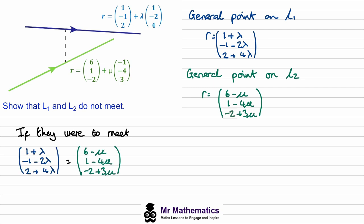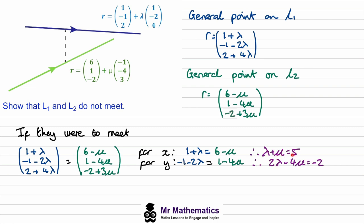We set up two simultaneous equations using x and y: for x, 1+λ = 6−μ giving λ+μ = 5; for y, −1−2λ = 1−4μ giving λ−4μ = −2. Solving these gives λ = 3 and μ = 2. Substituting into the z-coordinates, L1 gives 2 + 4(3) = 14 and L2 gives −2 + 3(2) = 4. Since 14 ≠ 4, the lines do not meet and are therefore skew.